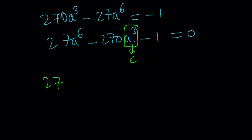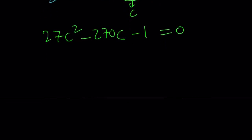So now we get 27c² - 270c - 1 = 0. And if you solve this quadratic equation, you get the following: c = (45 ± 26√3)/9.